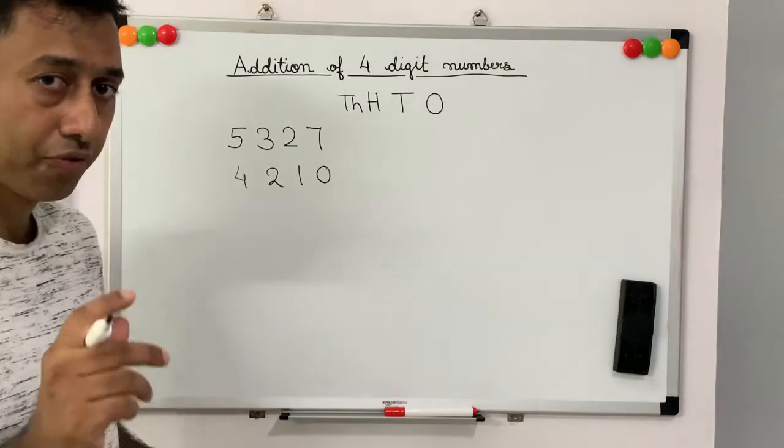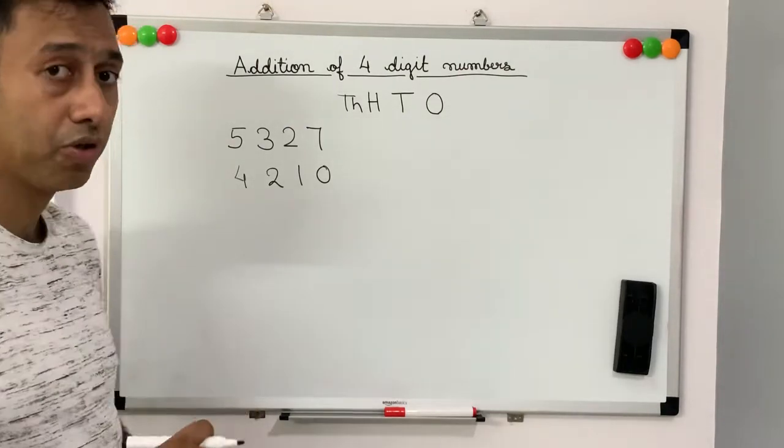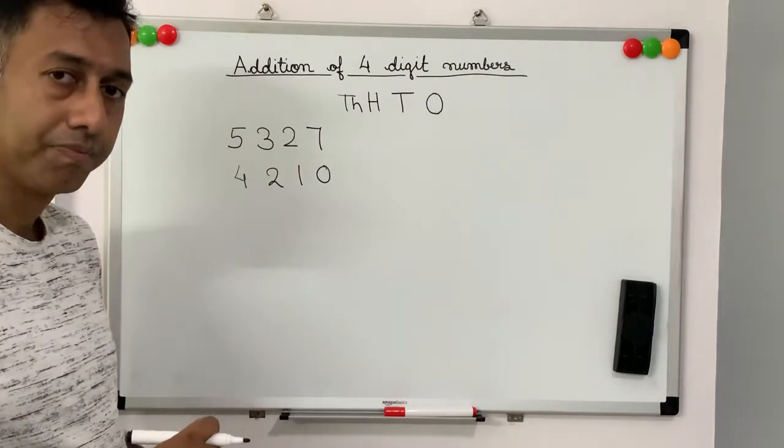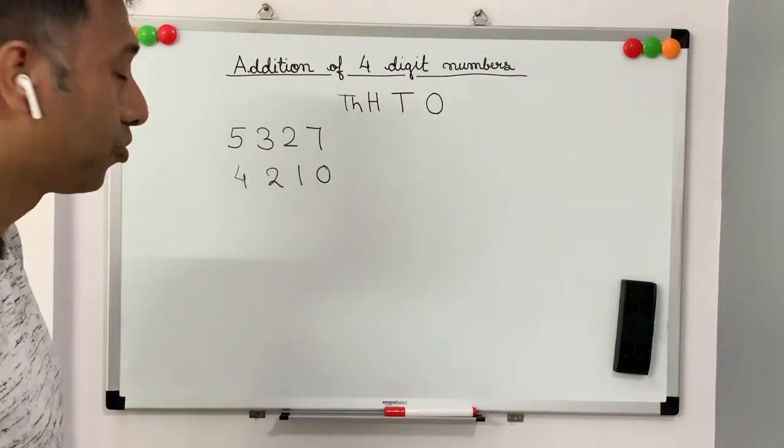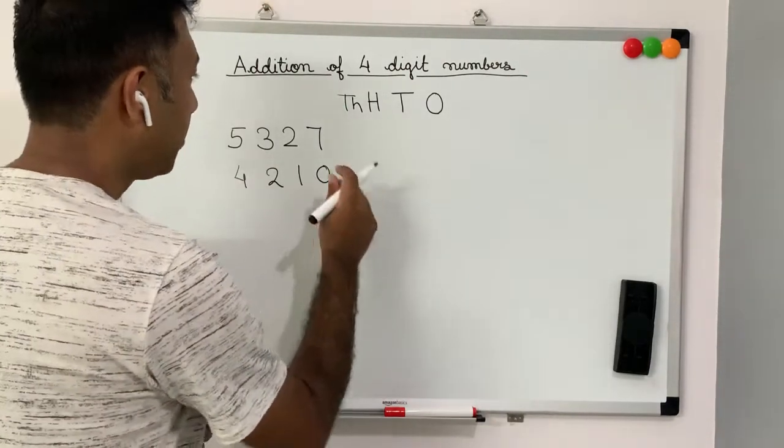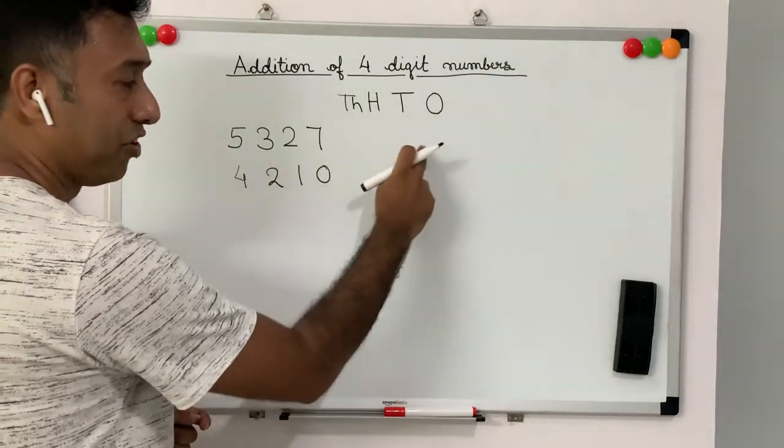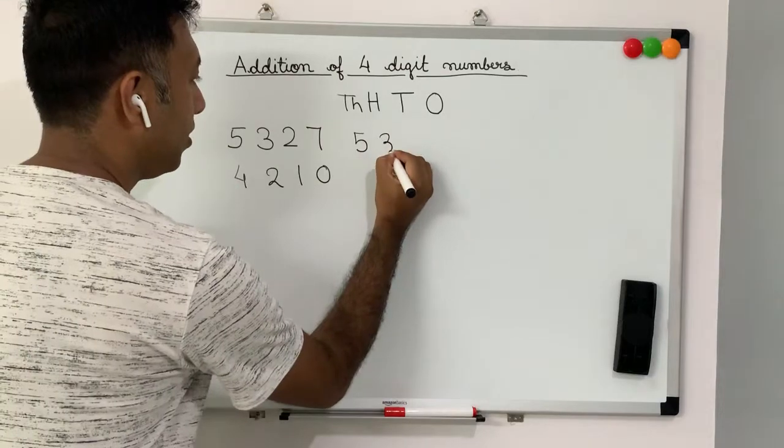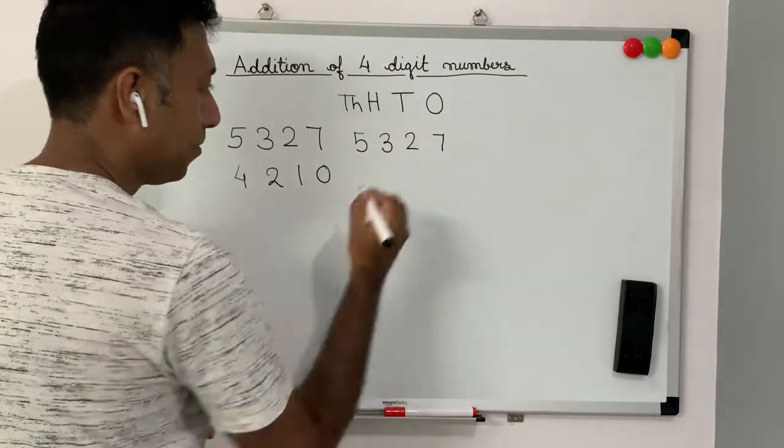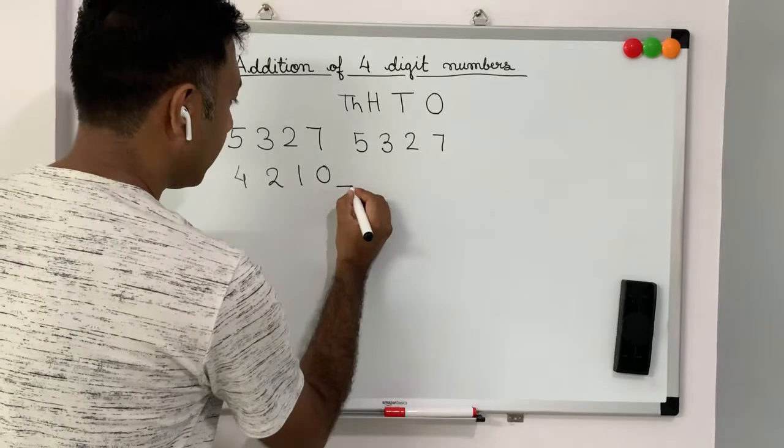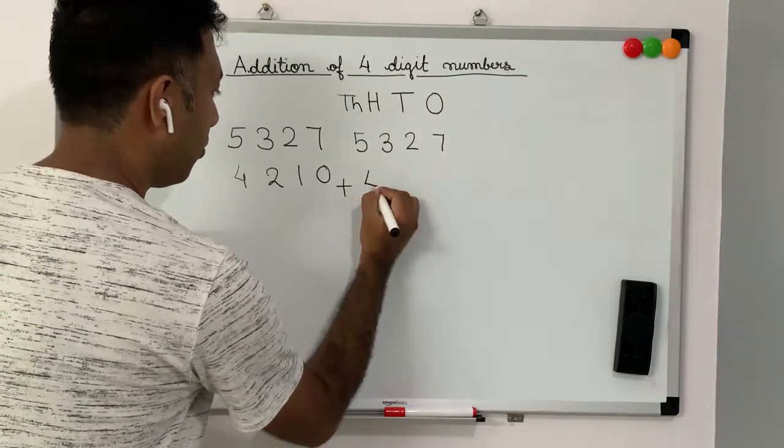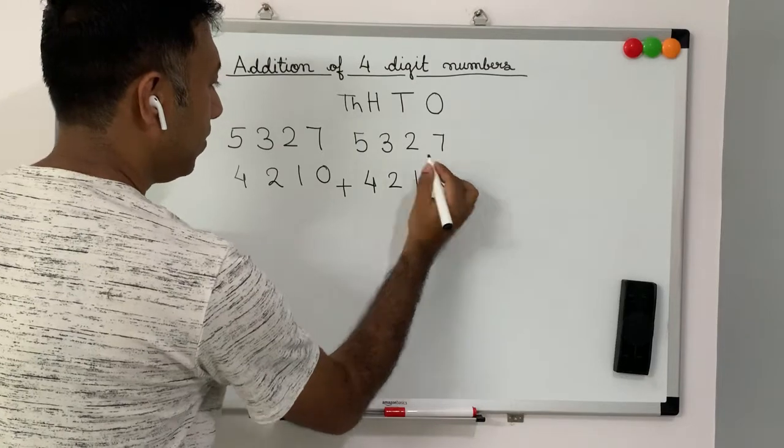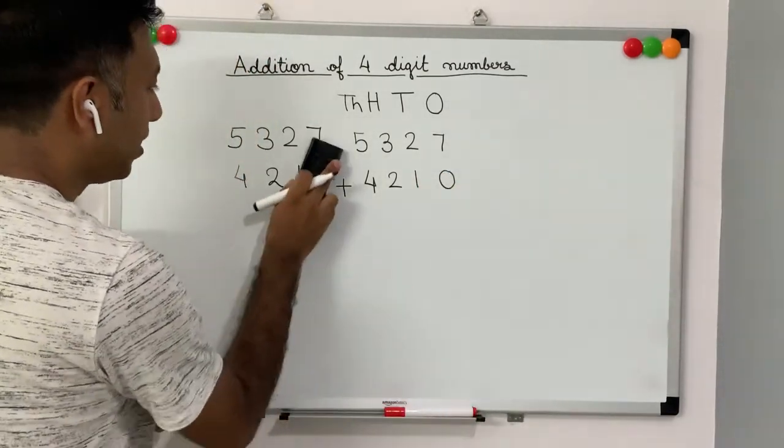You can pause this video for a second and try to do it on your own. Now, let me try to solve it for you. So, let's write these numbers in their respective houses. 5, 3, 2, 7. Plus, 4, 2, 1, 0. Let me erase these numbers.